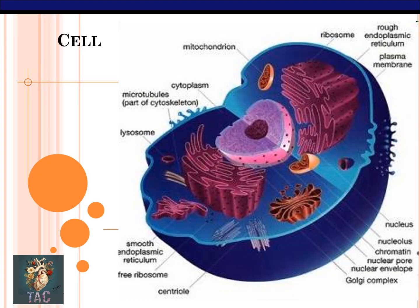A little bit of revision from your previous knowledge about the cell: the cell consists of the cytoplasm, covered by the cell membrane, and consists of the nucleus and nucleolus. The nucleus is covered by the nuclear membrane. Surrounding the nucleus is the rough endoplasmic reticulum, studded with ribosomes. The cell also has a large number of mitochondria, microtubules, smooth endoplasmic reticulum, a pair of centrioles, and the Golgi complex.